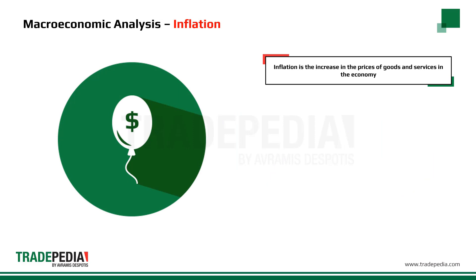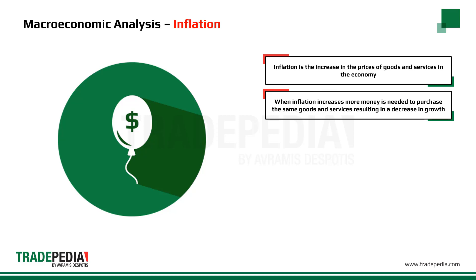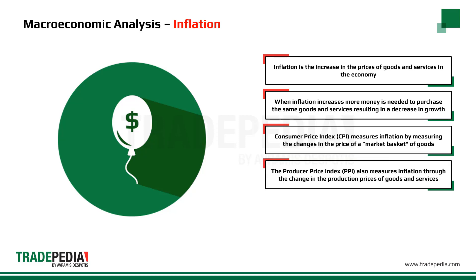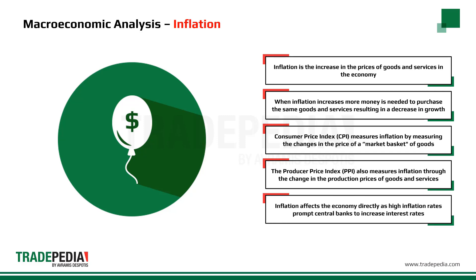Inflation is the increase in the price of goods and services in the economy. When inflation increases, more money is needed to purchase the same quantity of goods and services, and this will eventually result in a decrease in growth. A typical measure of inflation is the Consumer Price Index, or CPI, which measures changes in the price of a market basket of goods. Another measure is the Producer Price Index, or PPI, which measures the change in production prices of goods and services.